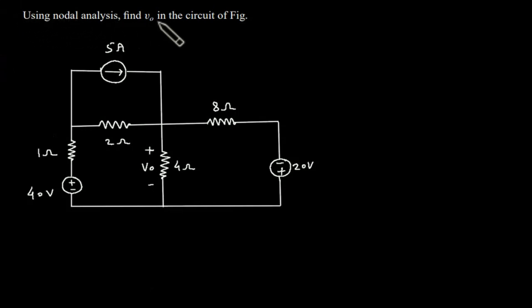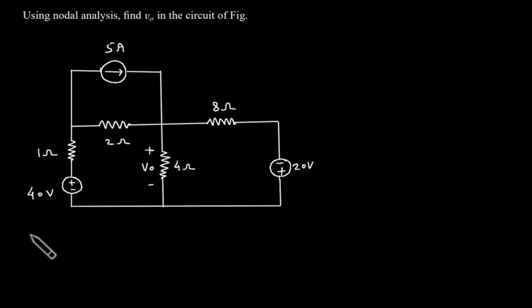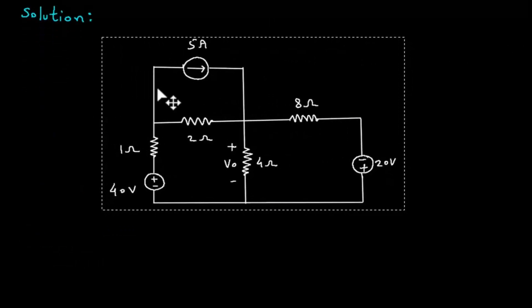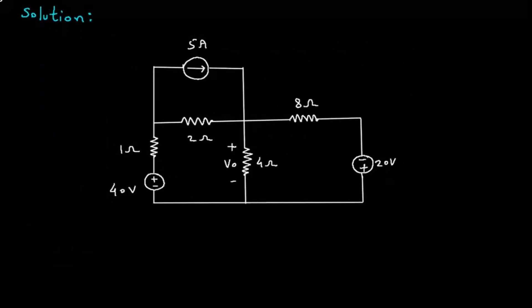Using nodal analysis, find VO in the circuit of the given figure. We have to find VO in this circuit using nodal analysis. For the solution, we will first redraw the circuit.